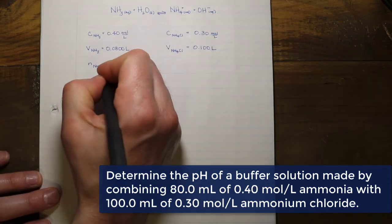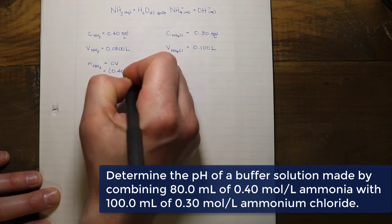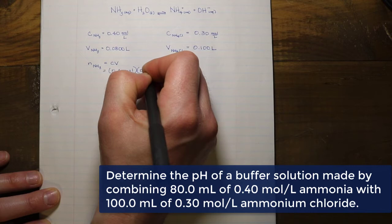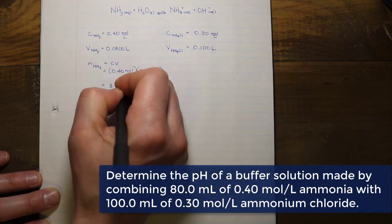So in that regard, I'll take my concentration of 0.40 moles per liter, multiply it by the volume converted from milliliters into liters, and I'm going to get a value of 3.2 times 10 to the negative 2 moles of ammonia that I initially have.